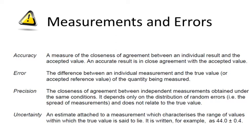Uncertainty: An estimate attached to a measurement which characterises the range of values within which the true value is said to lie. It's written, for example, as 44.0 plus minus 0.4.